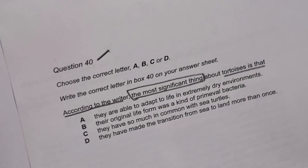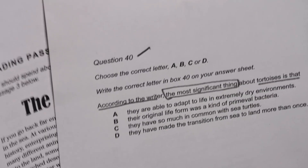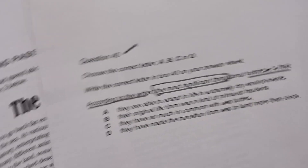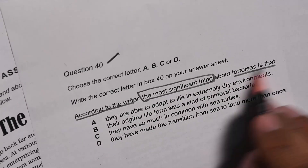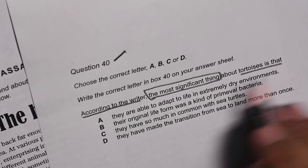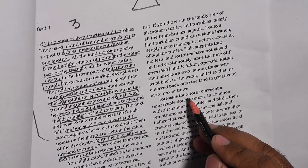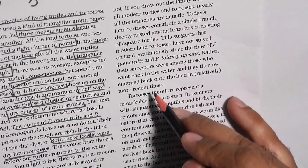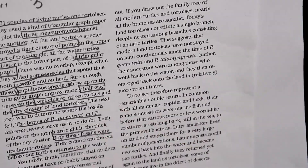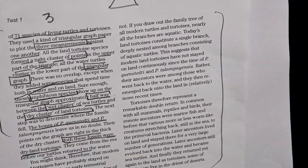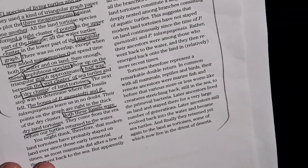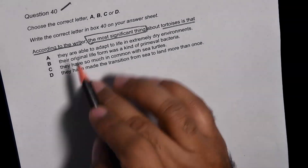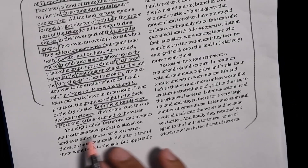I'm not going to read the options first — they will confuse me. I need to find what the most significant thing about tortoises is according to the writer. I've been through the passage and there are untouched paragraphs, so the answer must be somewhere in those sections. Let's see.